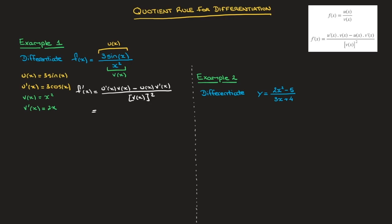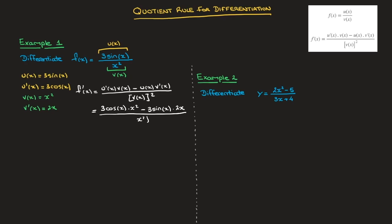Now that we've written this and reminded ourselves of the formula, we go ahead and replace u, v, u dash, and v dash by the functions we have here. So that's equal to u dash, which is 3 cosine of x, times v, which is x squared, minus u, which is 3 sine of x, times v dash, which is 2x. And all of that is written over v squared, so that's x squared squared.